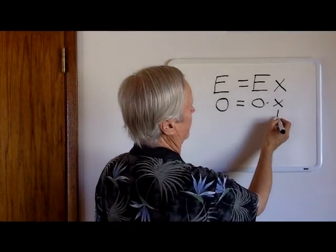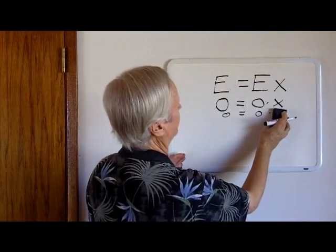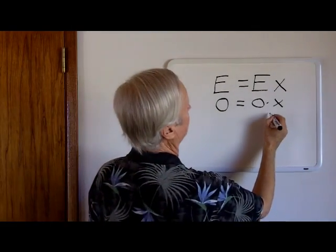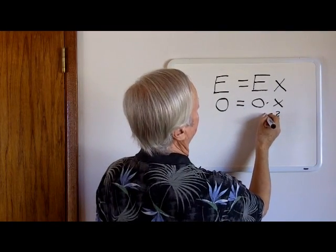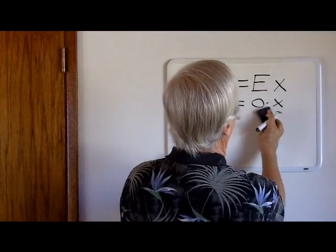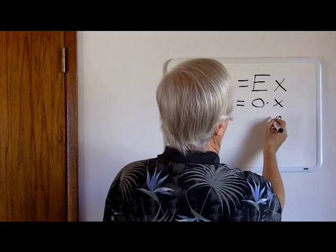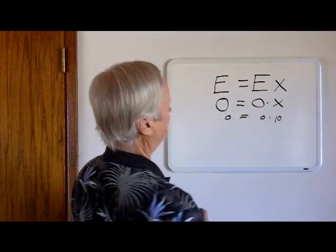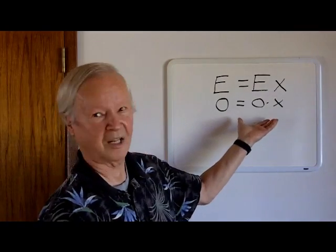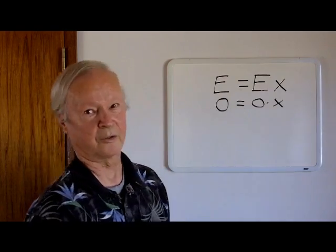Now can x be 1? I will say 1 times 0 equals 0, so 1 works. Could x be minus 2? Minus 2 times 0 equals 0, minus 2 works. Could x be 10? 10 times 0 equals 0, x equals 10 works. So the solution to x can be anything - x can be absolutely anything and this equation holds true.